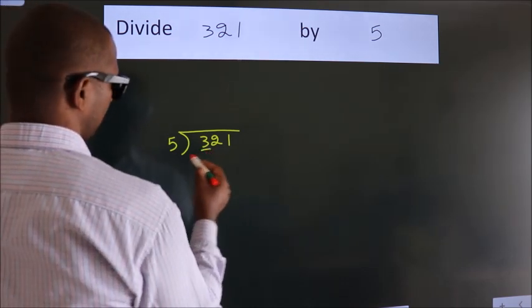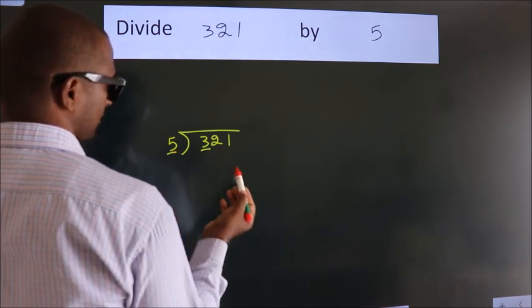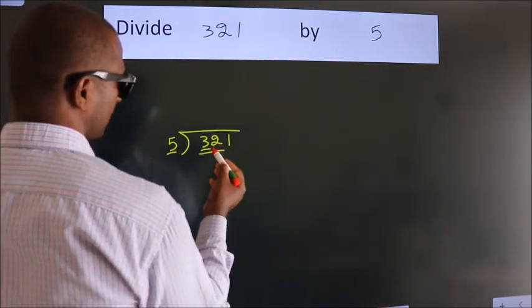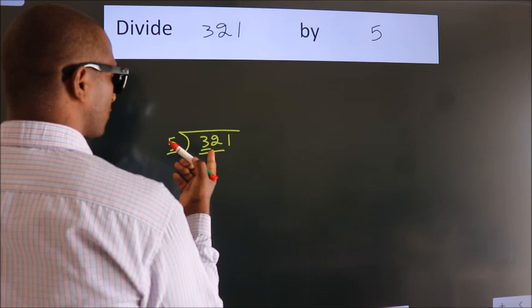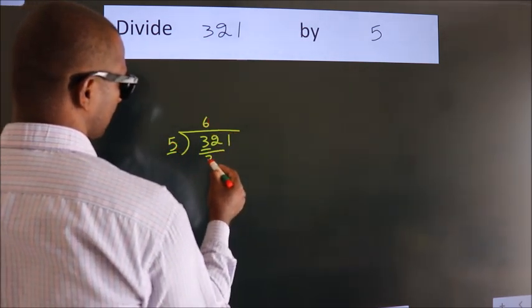Here we have 3. Here 5. 3 smaller than 5. So we should take 2 numbers, 32. A number close to 32 in 5 table is 5, 6, 30.